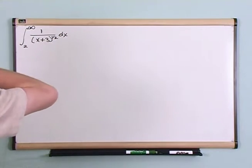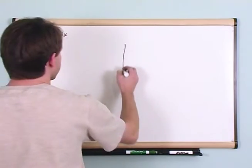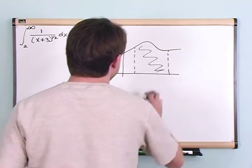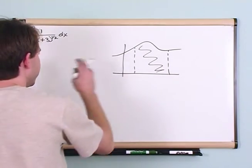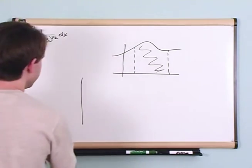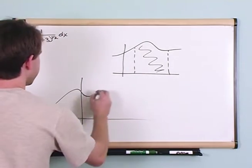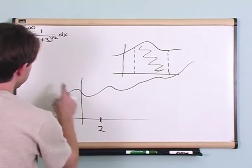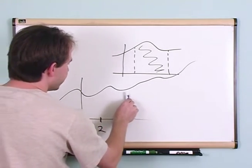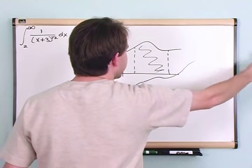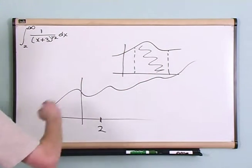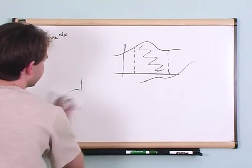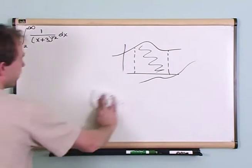First, you might ask what does that mean? Usually you have an integral of some function and you're looking at the area between two points and you're going to find this area. Now if your integral goes kind of up like this and you integrate from some number all the way to infinity, the area is just going to get bigger and bigger and you're going to end up getting infinity. It's not going to converge — it's not going to actually equal a number, it's going to equal infinity.